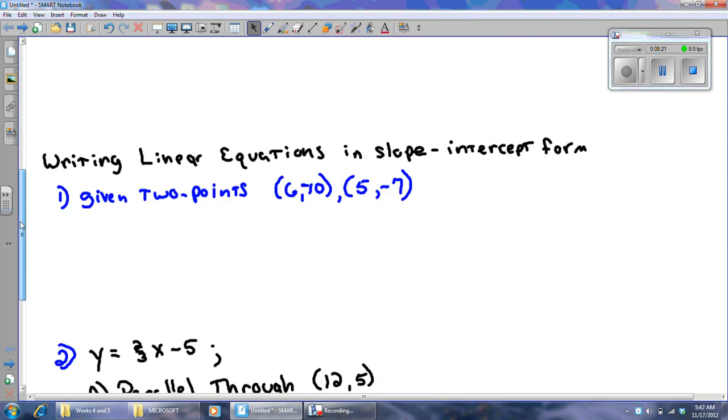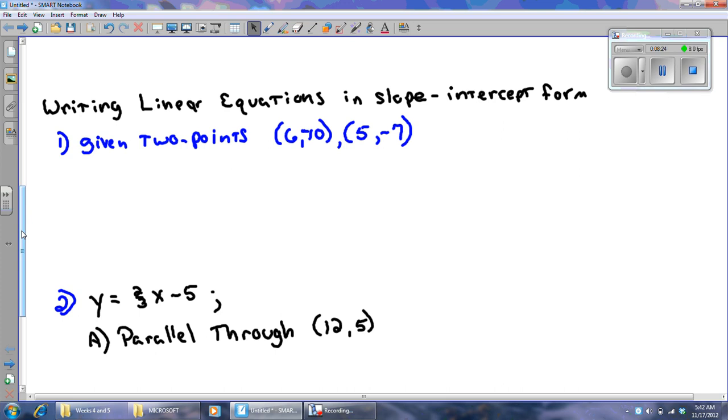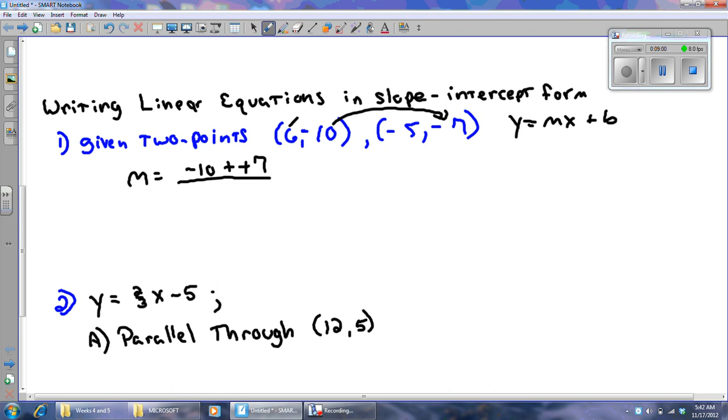Now, I'm going to do it two different ways. The first way, hold on, that didn't look like the point I wanted it to, is just when you're given two points, can you get me an equation in y equals mx plus b form? Well, first thing I'm going to do is going to define my slope, and this is another subtraction one, so I'm going to do negative 10 minus negative 7, and then I'm going to do 6 minus negative 5, 6 minus negative 5.